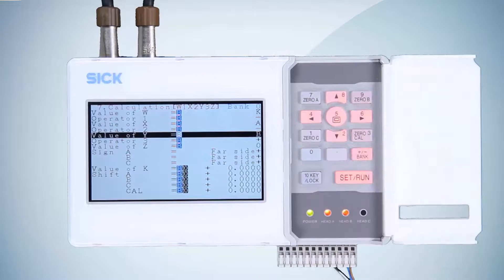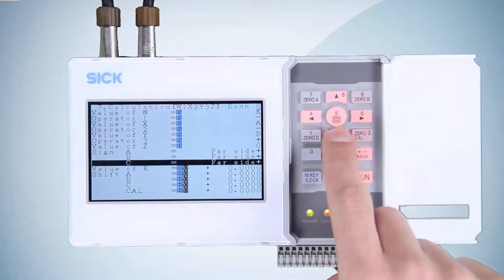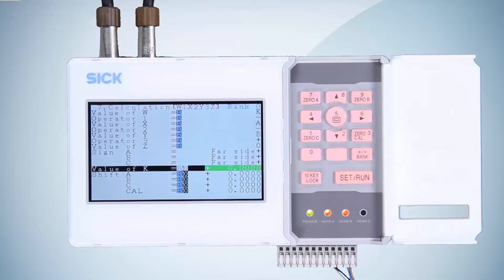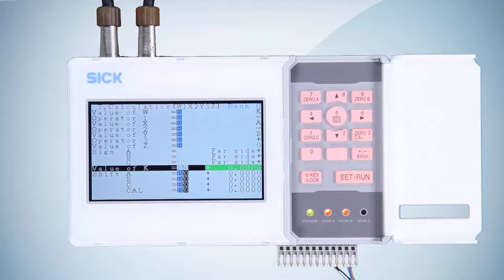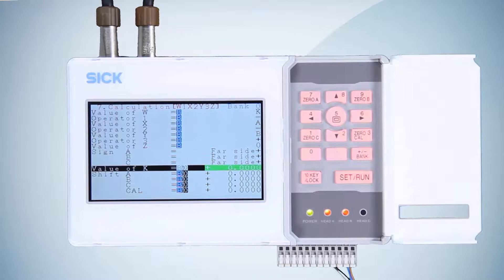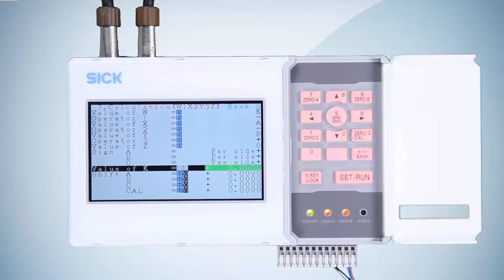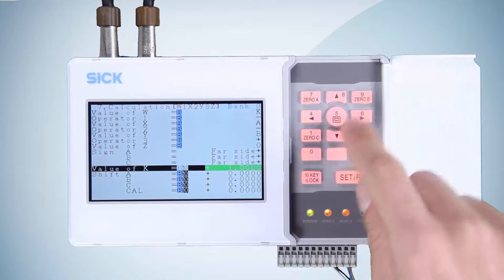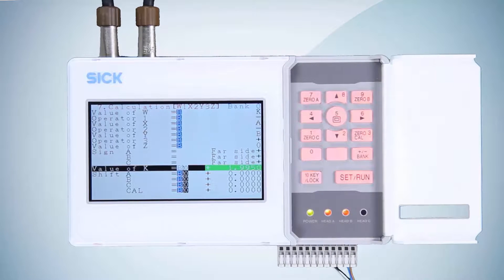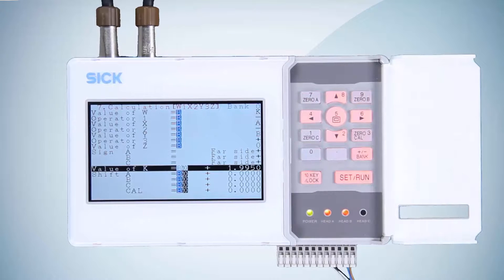Now go to value of K and press the 10 keystroke lock pushbutton to enter a value using the number keys. Enter the reference value, in our case 1.9950, and press the number 10 keystroke lock pushbutton again to finish entering the settings.